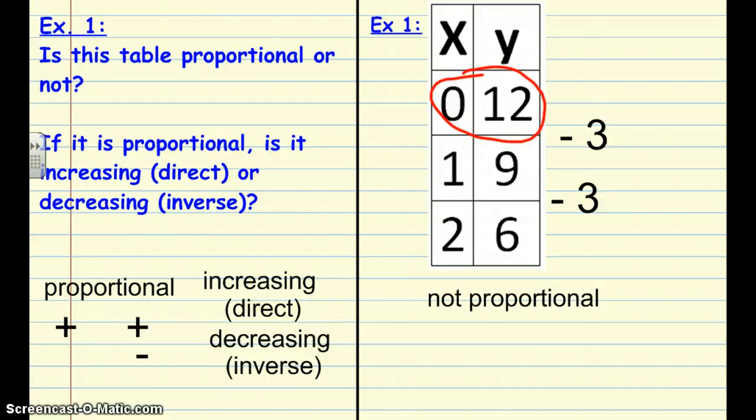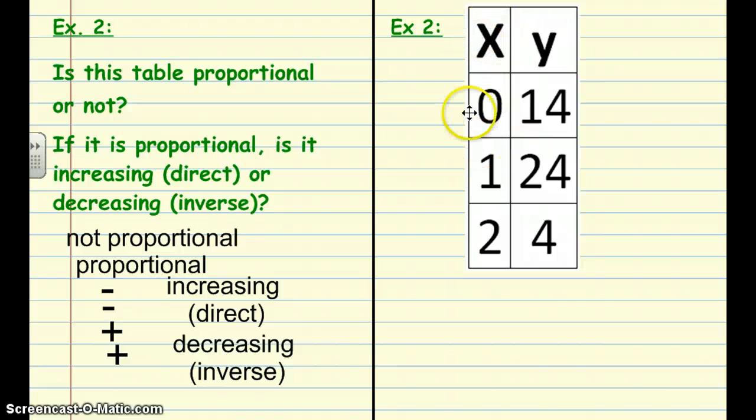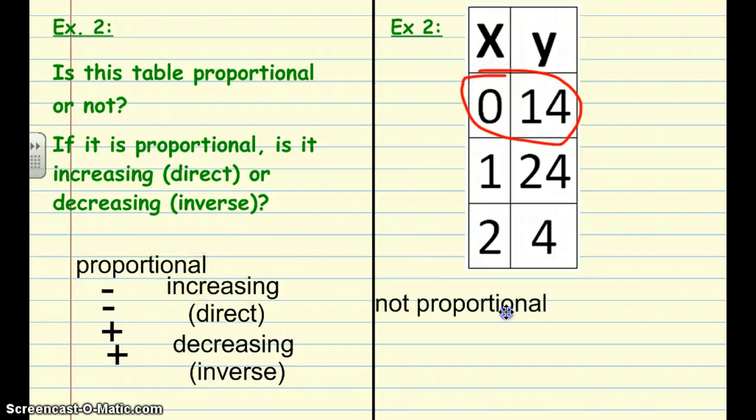Okay, let's look at example 2. Take a moment and copy this table down. Okay, again, taking a look at this table, I notice that I do not have the coordinate pair (0,0). So right off the bat I know it's not proportional.